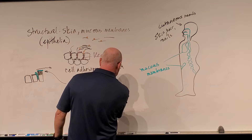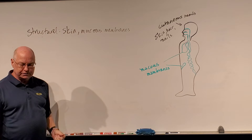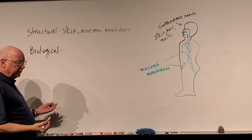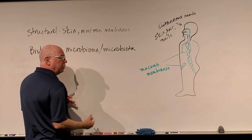Now I'm going to go into the second facet of our first line of defense. We have a structural component — the actual skin and mucous membranes themselves. We also have what we call the biological component. The biological component — biology meaning living things — would be our microbiome, or what we call the microbiota, our normal flora.